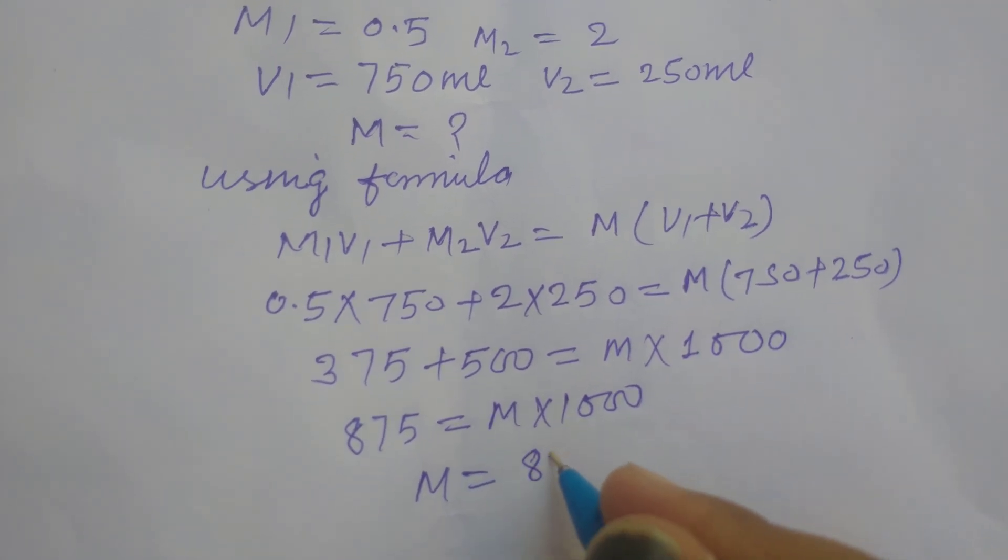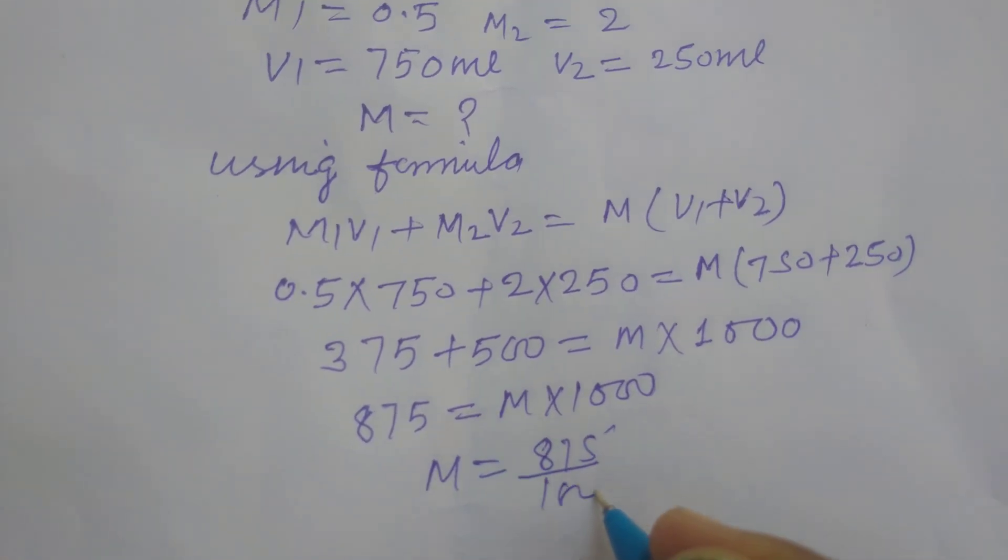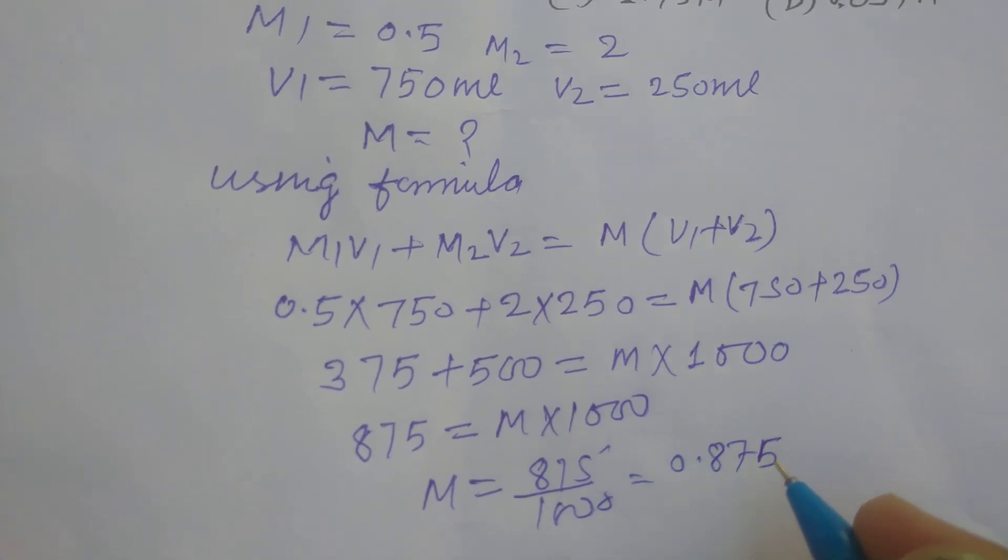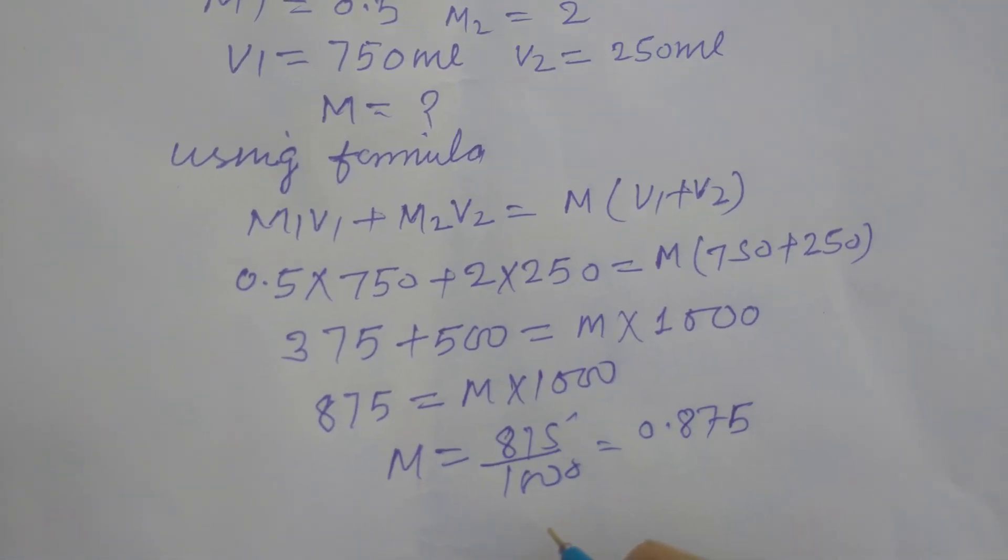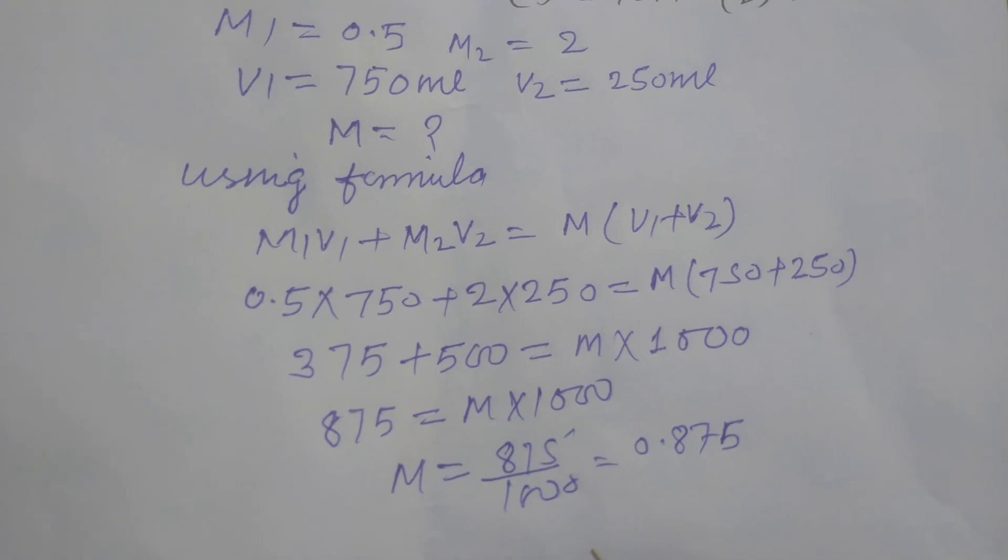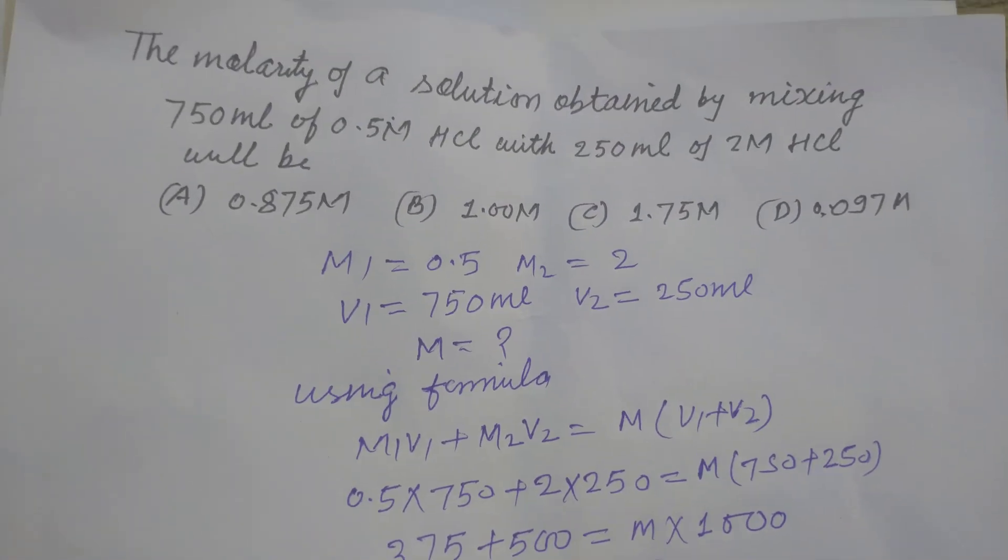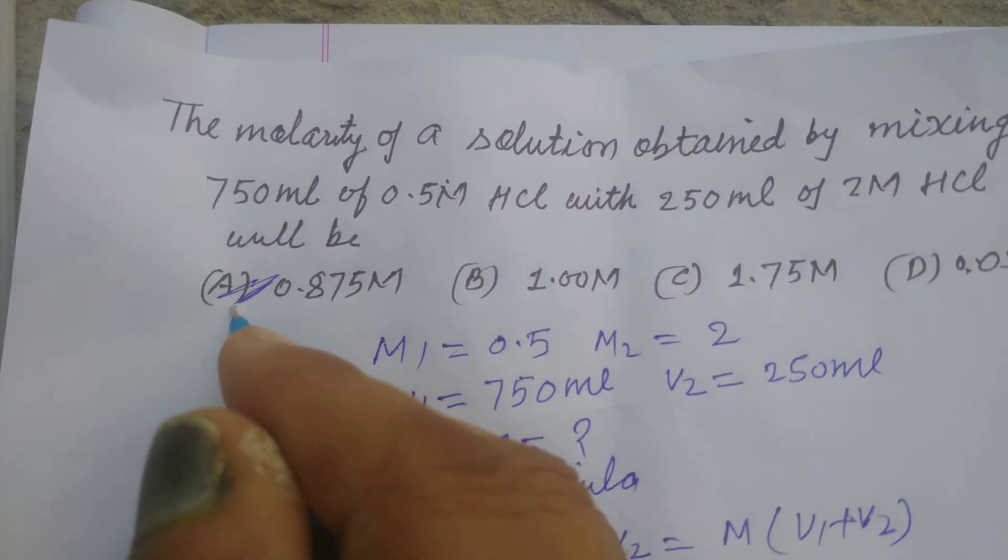we get 875 upon 1000 equal to 0.875 M. So M, the molarity of the mixture solution, is 0.875, which is found in option A.